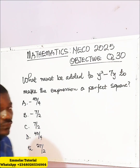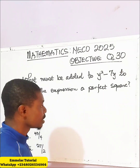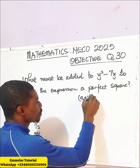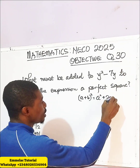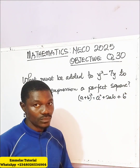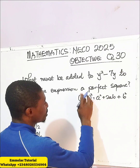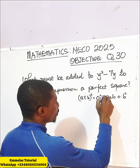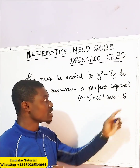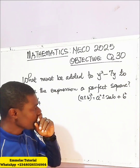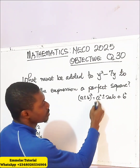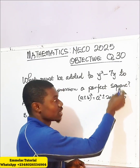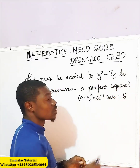Here are the options. First of all, let us recall that for a perfect square expression, if you have (a plus or minus b) squared, this gives us a squared plus or minus 2ab plus b squared. So this expression ought to be in this form, and we are looking for b squared to complement the expression and make it a perfect square.